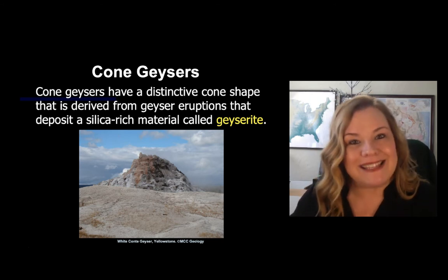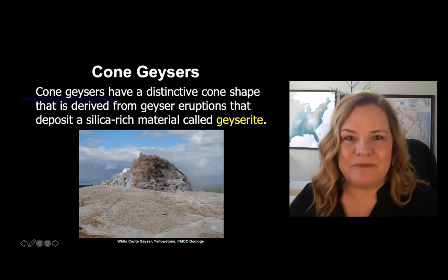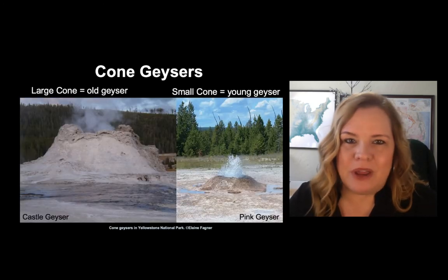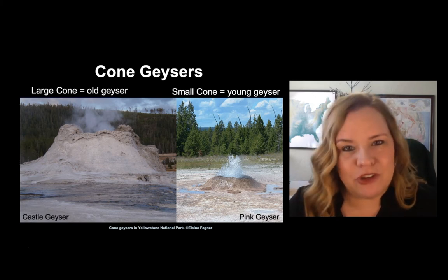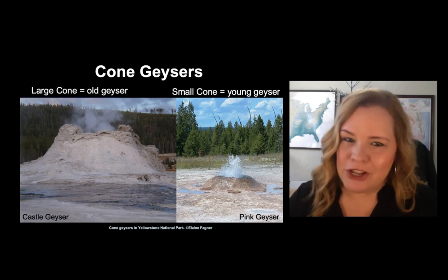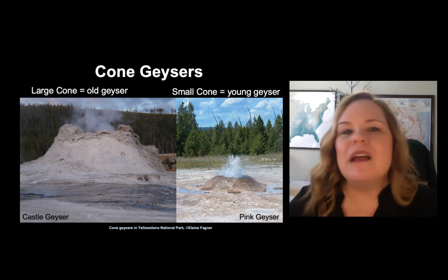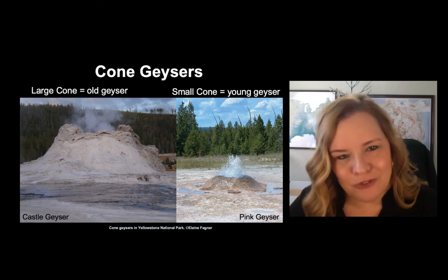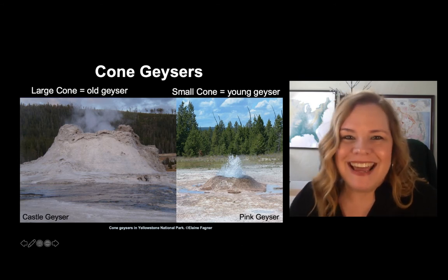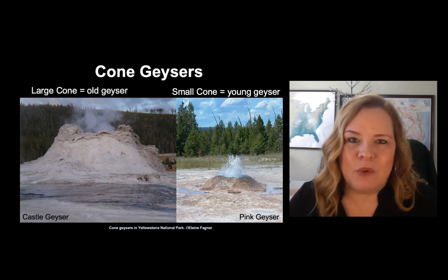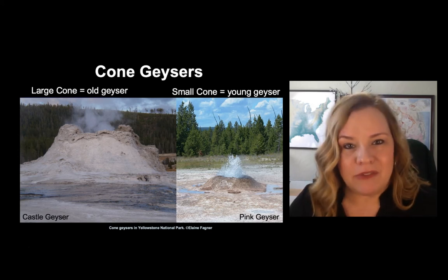When you look at these two geysers — both from Yellowstone — compare their size. The larger the cone, the older the cone, and likely the more frequent the eruption. This is Castle Geyser on the left — a large cone indicating it has been erupting for longer, depositing more geyserite, and likely erupting more frequently. Then there's the small cone for Pink Geyser. Older geysers have bigger cones.